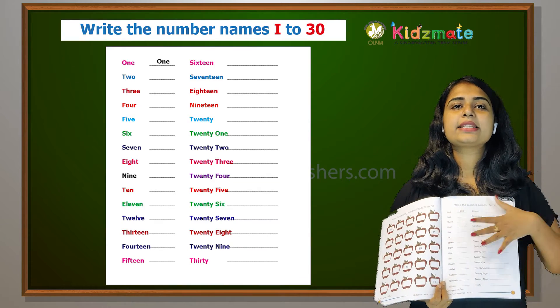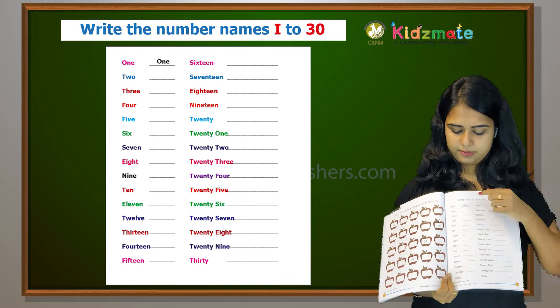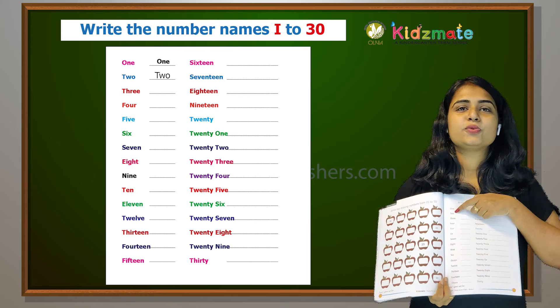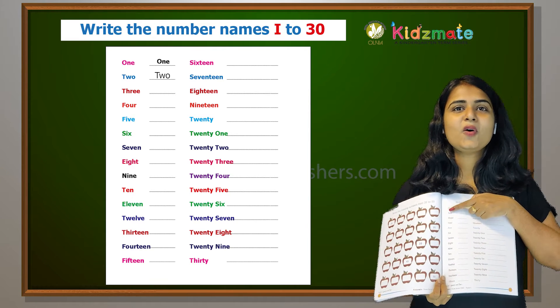Number one, O-N-E, one. Two, T-W-O, two.